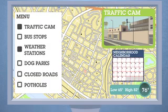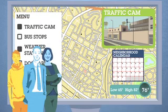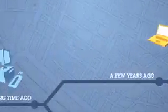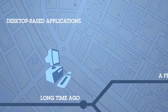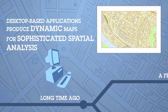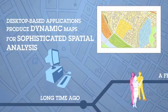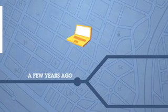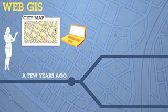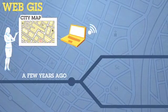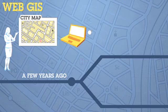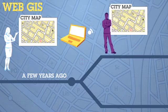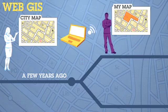But GIS didn't always work this way. Initially it was comprised of desktop-based applications that produced dynamic maps for sophisticated spatial analysis. These early maps were not accessible to the general public. Out of desktop GIS evolved the second wave — web GIS — utilizing the internet to add more capabilities. Web GIS allowed government executives to enable citizens to create their own maps and view location-based data in real time.